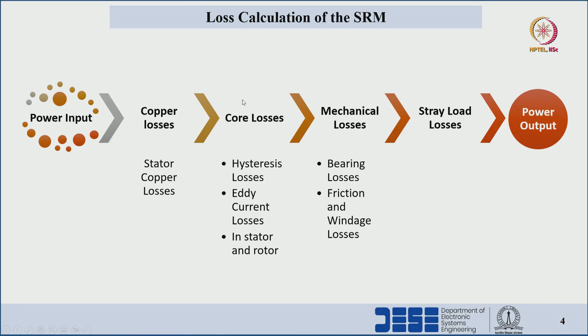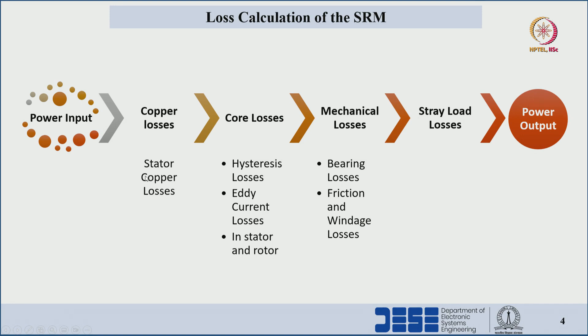Here we can see the losses happening in switched reluctance machine: copper losses, core losses, and mechanical losses. The advantage of the switched reluctance machine is that there is no winding at the rotor side; because of that reason there is no copper loss at the rotor side.